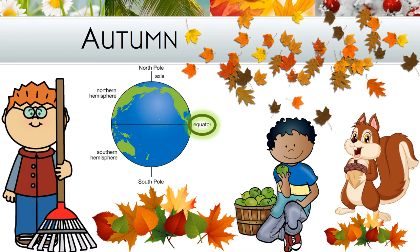When it is autumn in the northern hemisphere, it is spring in the southern hemisphere. When it is autumn in the southern hemisphere, it is spring in the northern hemisphere. On the equator, autumn is very much like spring, with little difference in temperature or in weather. Autumn is a time when most animals are looking for food so they can store up for winter, because they soon will be going into hibernation. The weather gets colder and more windy, and the hours of daylight and the hours of night are the same. The weather turns cooler and often windy and rainy.